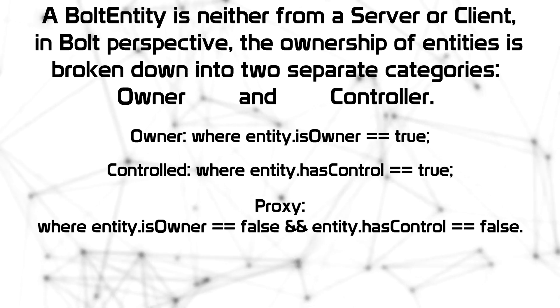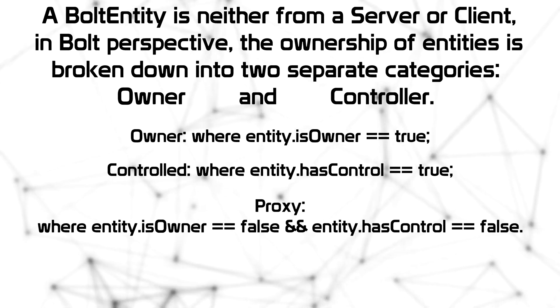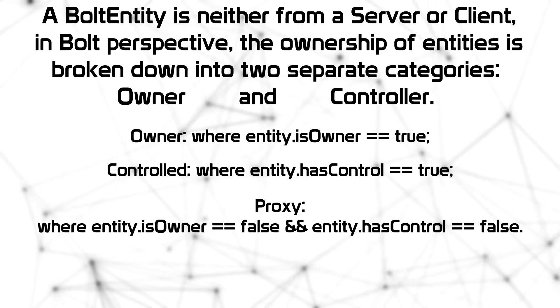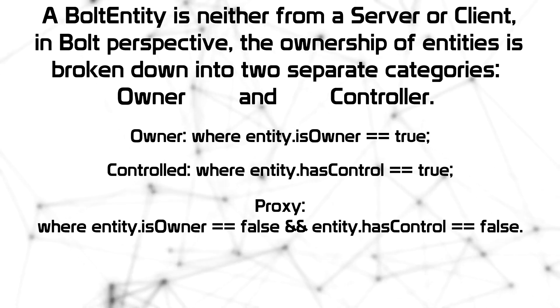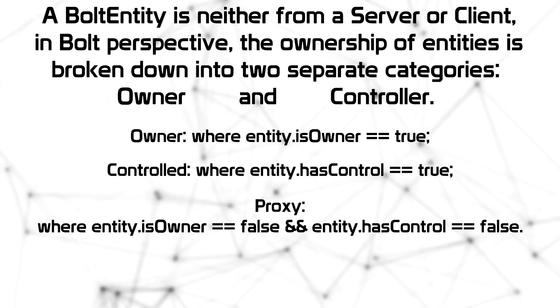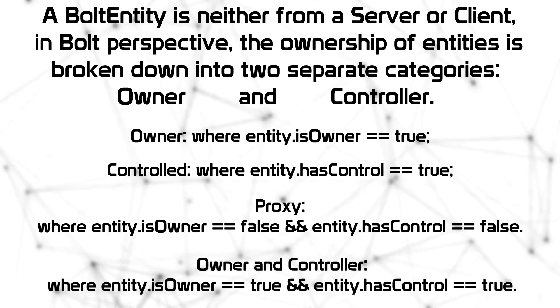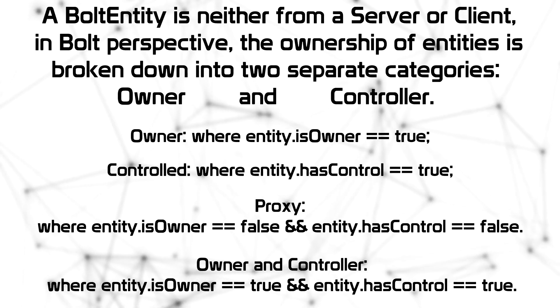You can be a proxy if entity.isOwner is false and entity.hasControl is false, or you can be owner and controller at the same time. Now I will show you an example which will certainly help you understand the ownership concept and the control concept of Photon Bolt. Let's start the simplified example of ownership.